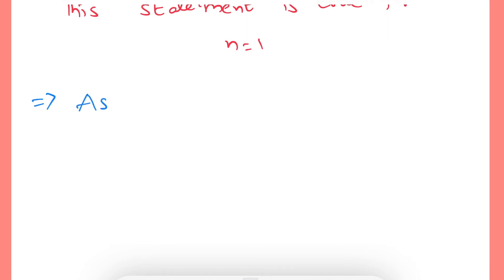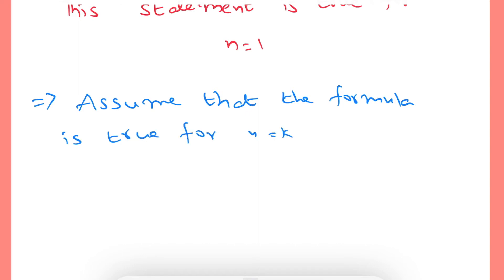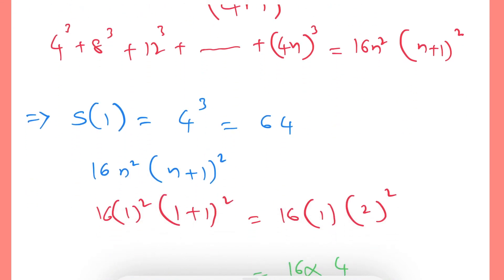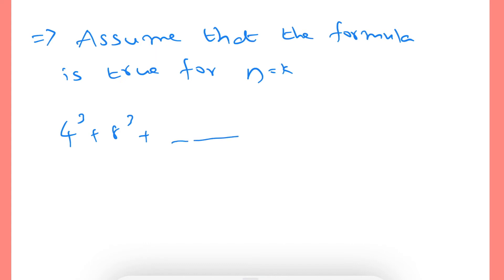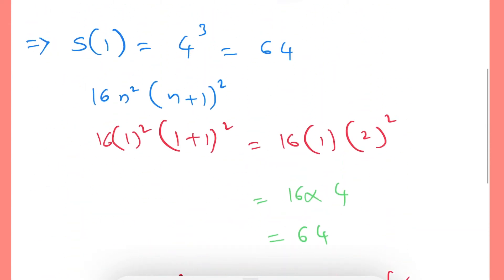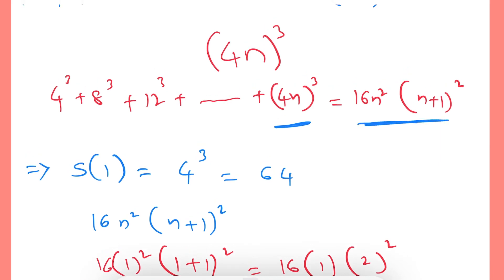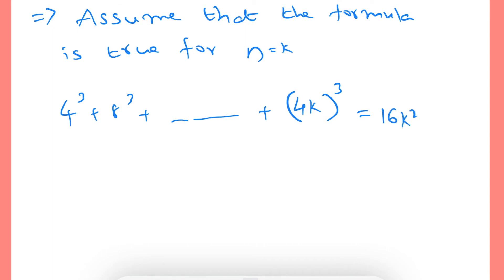Step 2 — assume the statement is true for n = k: 4³ + 8³ + ... + (4k)³ = 16k²(k+1)². Step 3 — we need to show it is true for n = k+1. Substituting k+1 into the formula: 16(k+1)²(k+2)². This is what we need to prove.